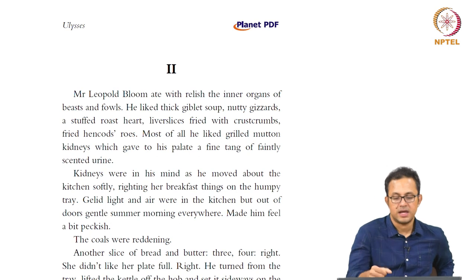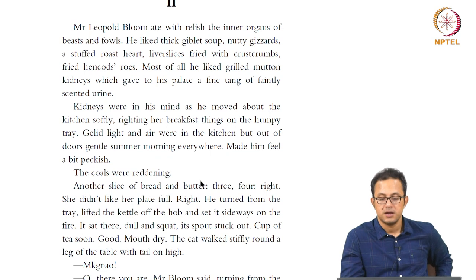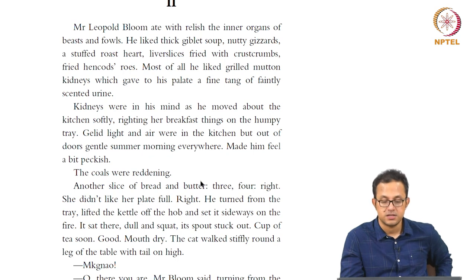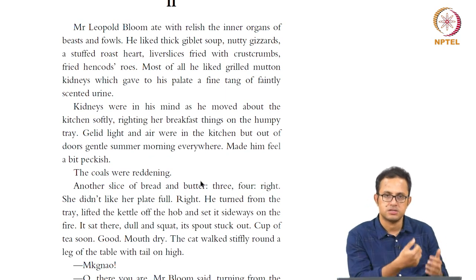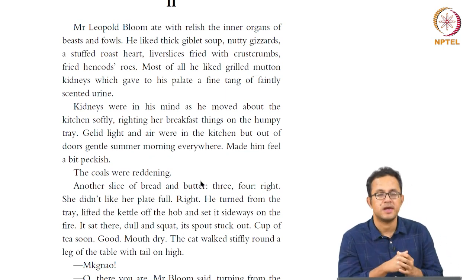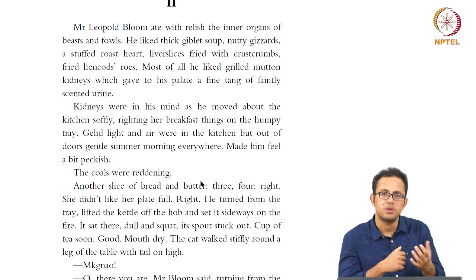The passage continues with very short, fragmented observations: the coals reddening, another slice of bread, he turned from the tray, lifted the kettle off the hob and set it sideways on the fire — 'it sat there dull and squat, its spout stuck out' — cup of tea soon. 'The cat walked stiffly around a leg of the table with tail on high.' Look at the almost automatic association that the thought processes achieve here — a degree of automatism about movements, almost machinic in quality.